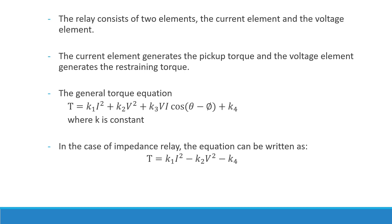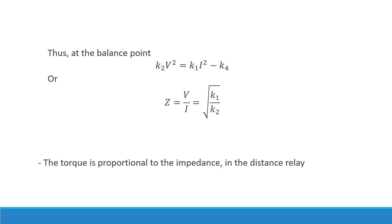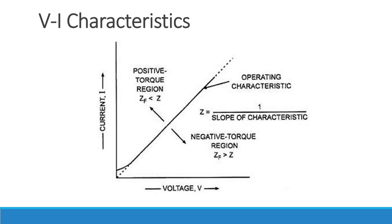The negative sign is because of the opposite direction of the voltage element. At the balance point we get K2·V² = K1·I² − K4, or V/I = √(K1/K2). From this we can understand that the torque generated in a distance relay is proportional to the impedance.